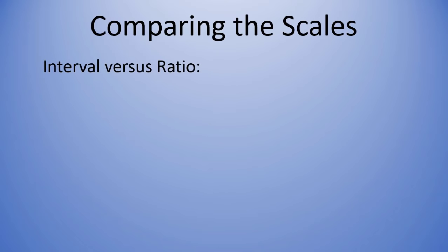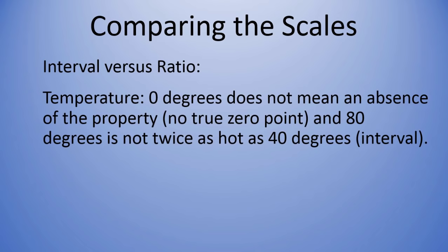Next, interval versus ratio. Now, the two qualities of ratio, recall, is that the ratios are meaningful and there's a true zero point, or zero means the absence of the property. Well, think of temperature: zero degrees. How is it outside? If you thought of zero degrees, you wouldn't say there's an absence of coldness or heat outside. You would say it's really cold, right?